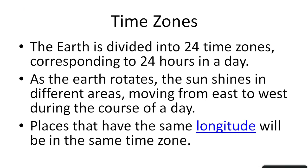The entire world has been divided into 24 time zones corresponding to 24 hours. Every time zone has approximately one hour time difference. Every one degree has four minutes of time, so every 15 degrees multiplied by four gives approximately 60 minutes — one hour. As the earth rotates, the sun shines on different areas moving from east to west during the course of the day. Places that have the same longitude will be in the same time zone across the globe.